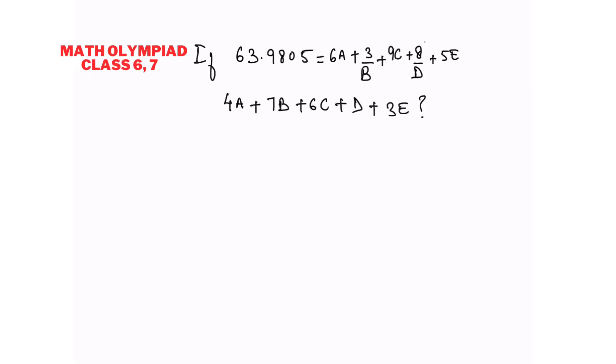So in this question it is given that 63.9805 is equal to 6a plus 3 by b plus 9c plus 8 by d plus 5e, and we need to find 4a plus 7b plus 6c plus d plus 3e.